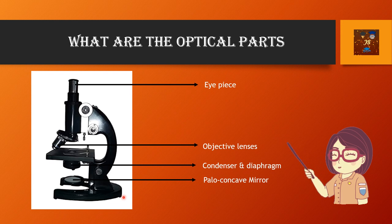What are the optical parts? You can see that these are the optical parts of a compound microscope. This is the eyepiece — it is the topmost part. Then comes the objective lenses, more than one, attached with the revolving nosepiece. Then comes the sub-stage structures: the condenser and the diaphragm, and then the plano-concave mirror. One side of the mirror is plane, another side is concave.